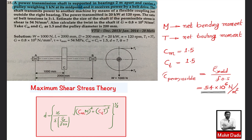The ratio of belt tensions is 3:1, with t1 as the tight side tension and t2 as the slack side tension. We have to find the diameter of the shaft using the permissible shear stress theory, also called the maximum shear stress theory, with the permissible shear stress given as 54 megapascal.